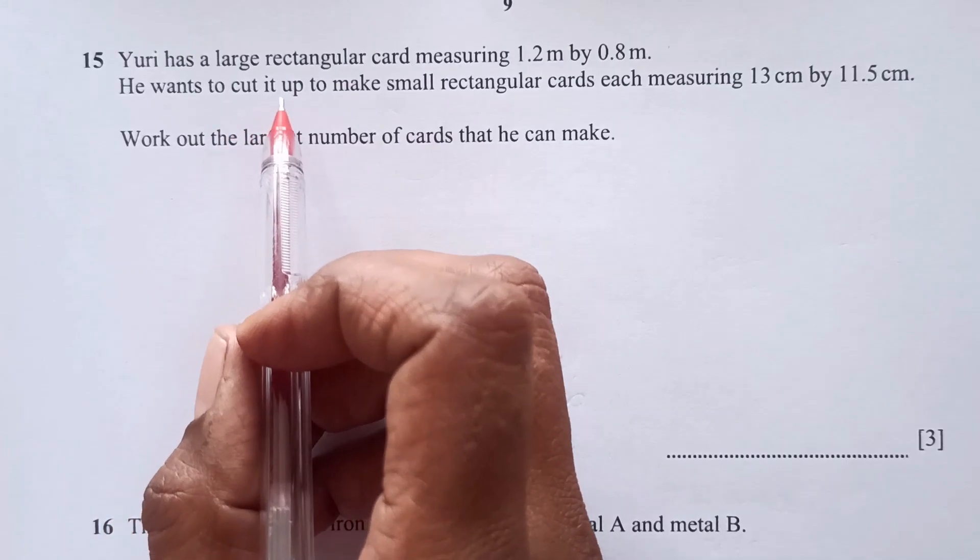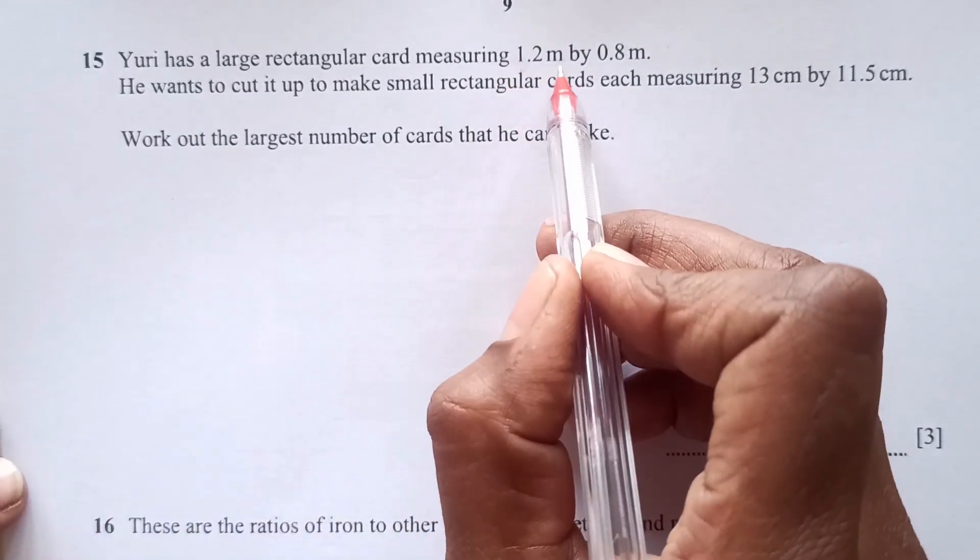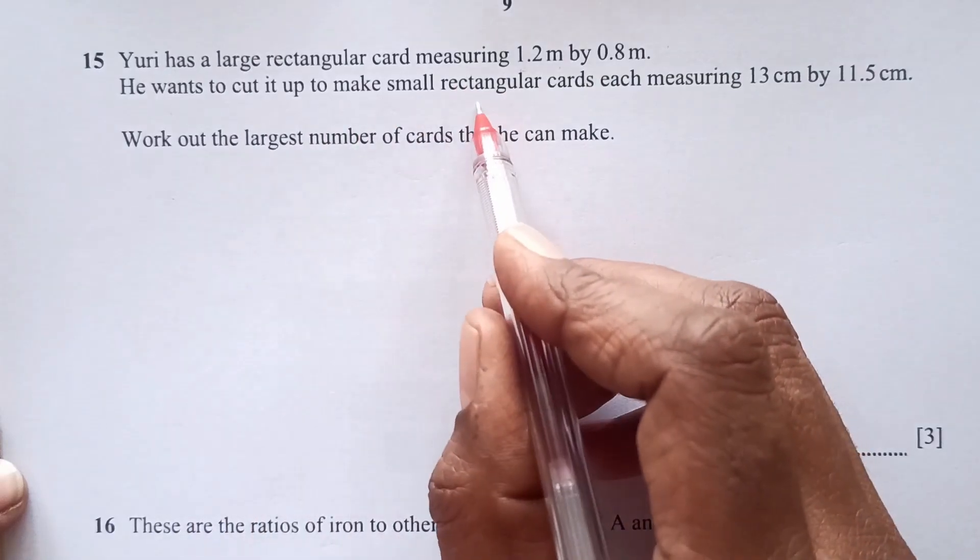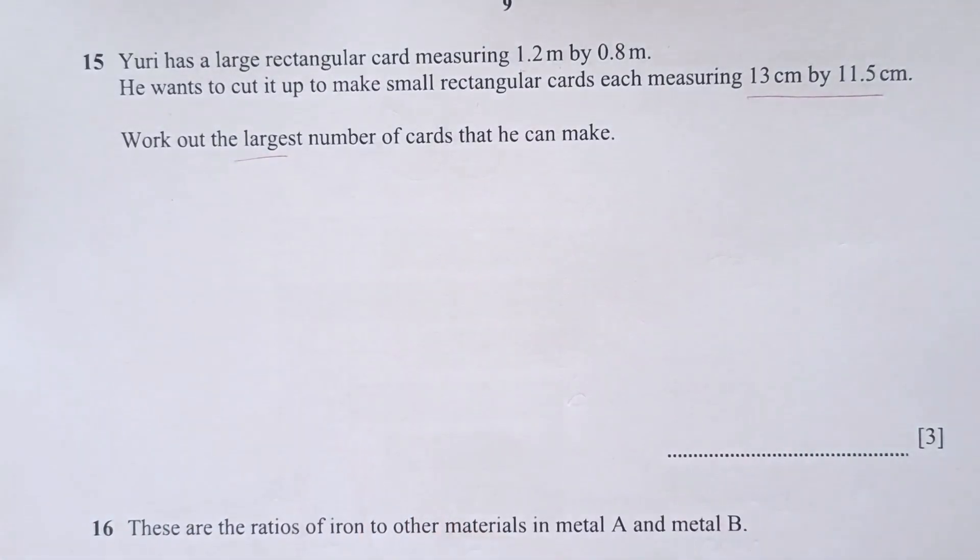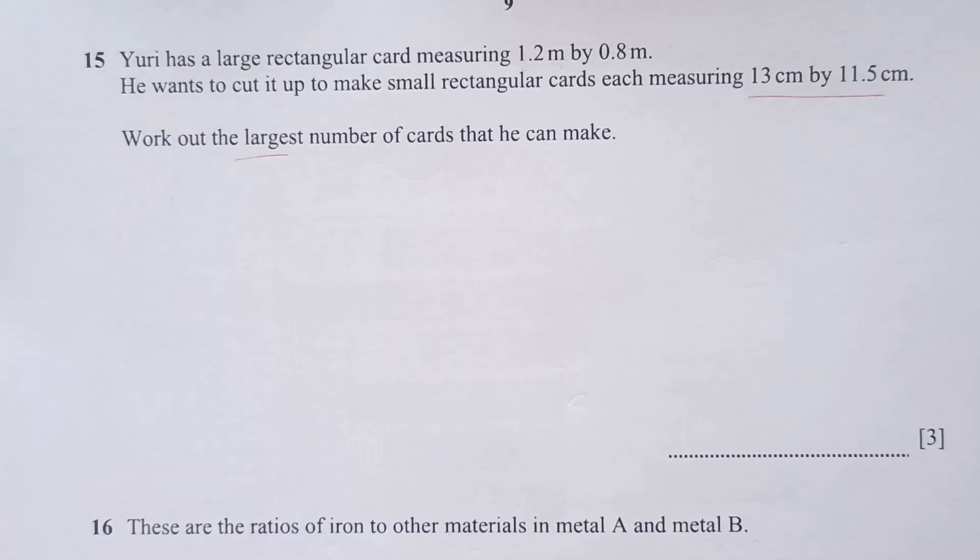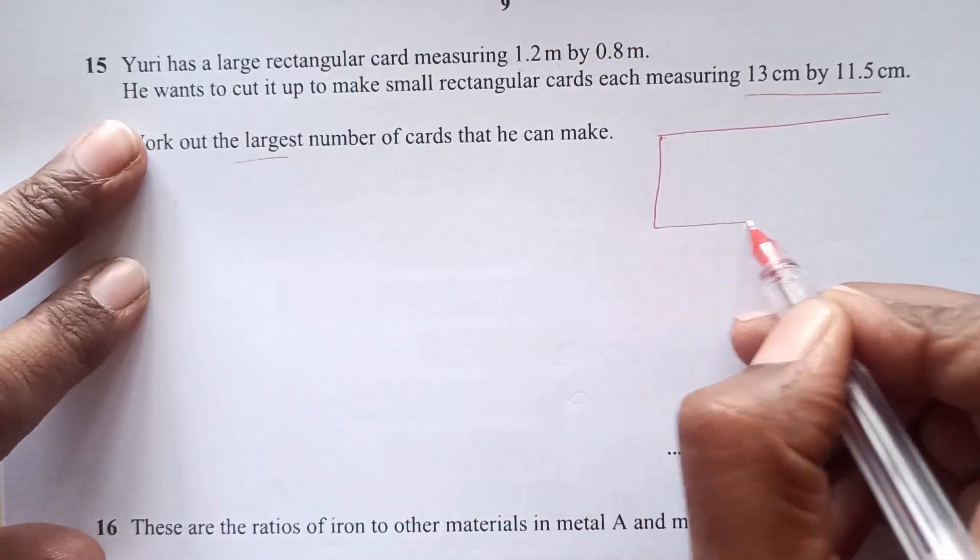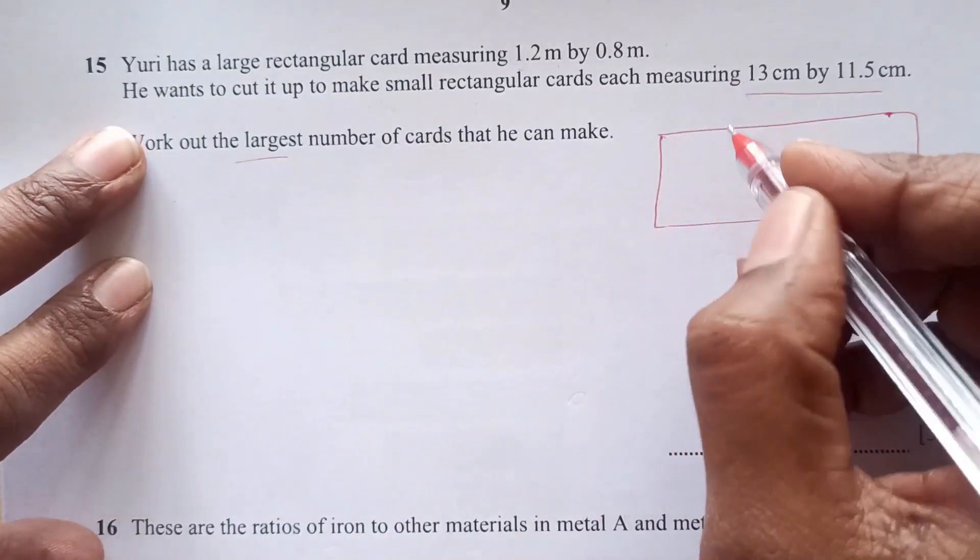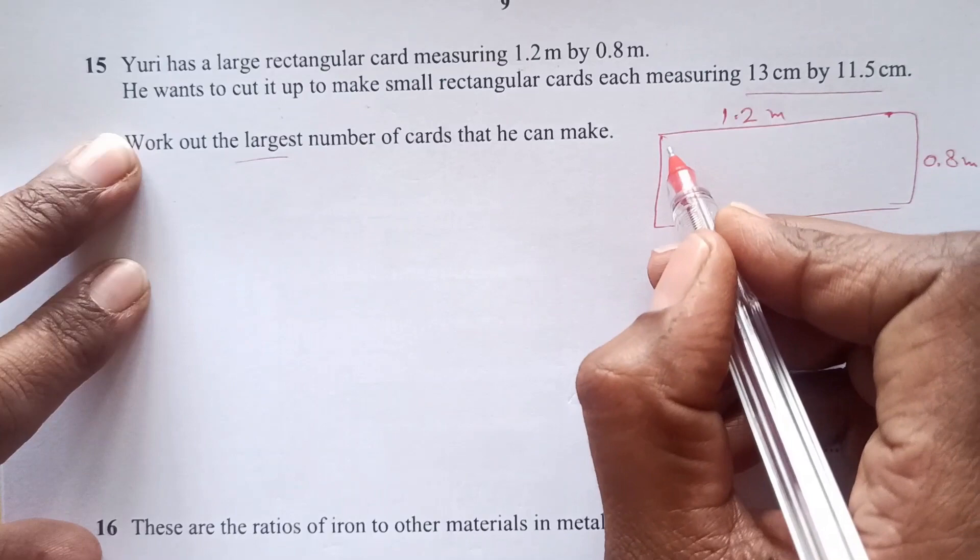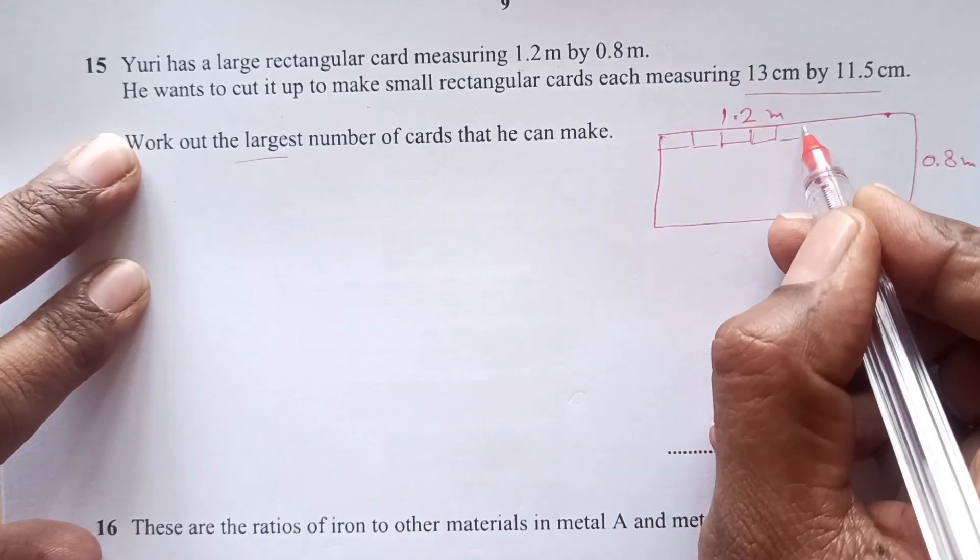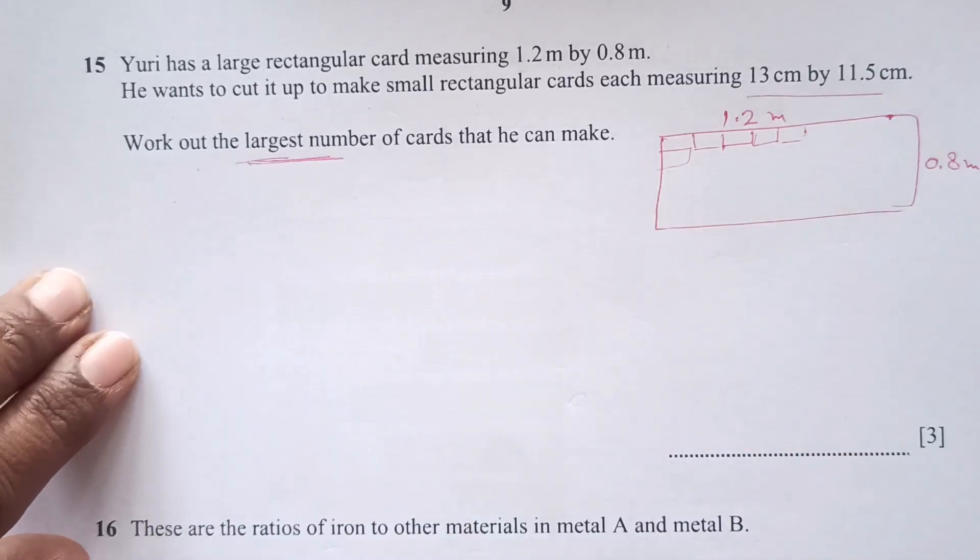Before we start, please subscribe to my channel and share it with your friends. Number 15: Yuri has a large rectangular card measuring 1.2 meters by 0.8 meters. He wants to cut it up to make small rectangular cards. Work out the largest number of cards that he can make. This should be done by area. Let me explain the question.